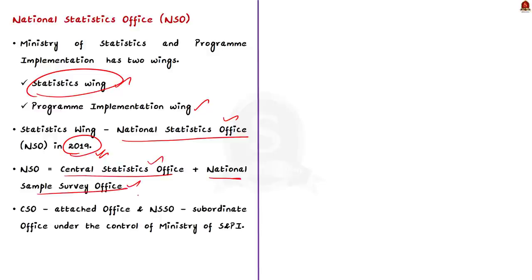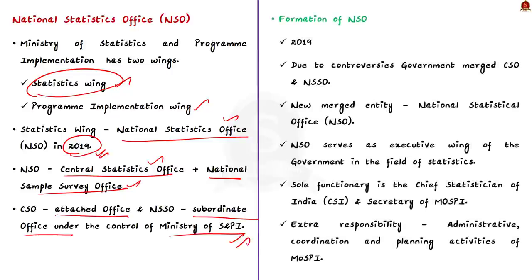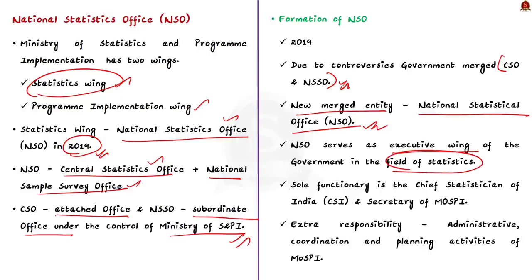The NSO consists of the Central Statistical Office and the National Sample Survey Office. The CSO is an attached office and the NSSO is a subordinate office under the Ministry of Statistics and Programme Implementation. The government decided to merge the CSO and NSSO into a single entity due to controversies regarding the functioning of India's official statistical system. This new merged entity was named the National Statistical Office. The NSO serves as the executive wing of the government in the field of statistics, headed by the Chief Statistician of India.